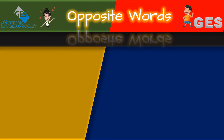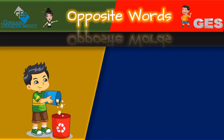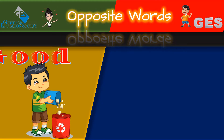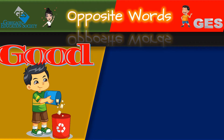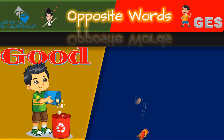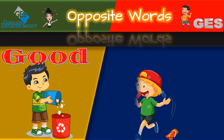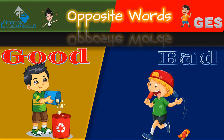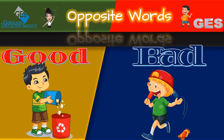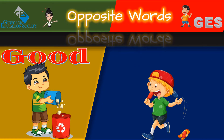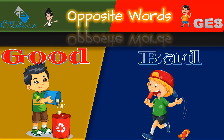A boy throwing waste in the bin — that is good. And a boy throwing a wrapper in the surrounding — that is bad. So the opposite words are good and bad.